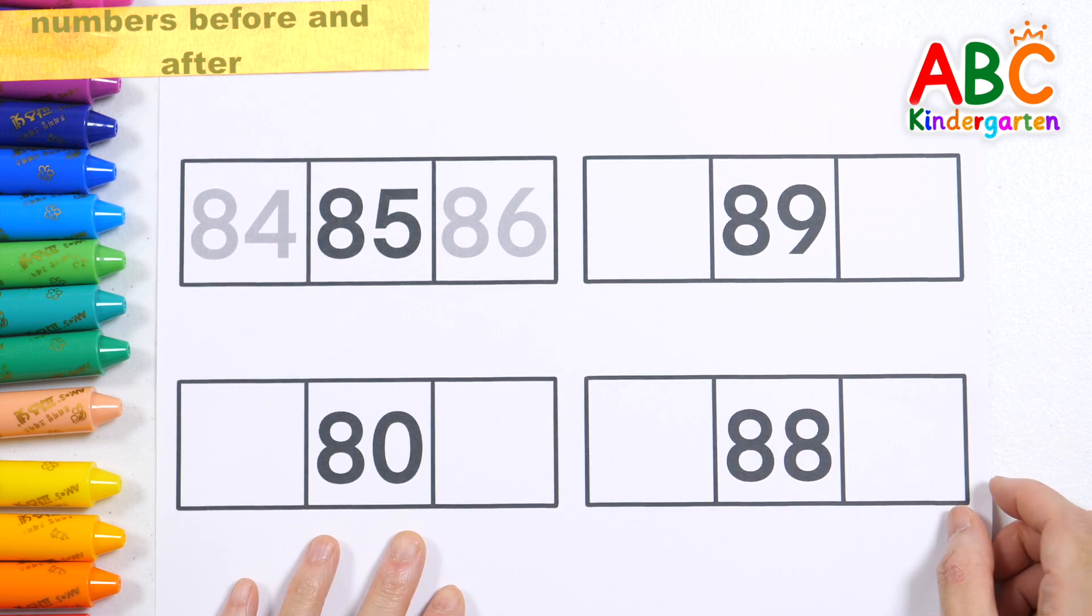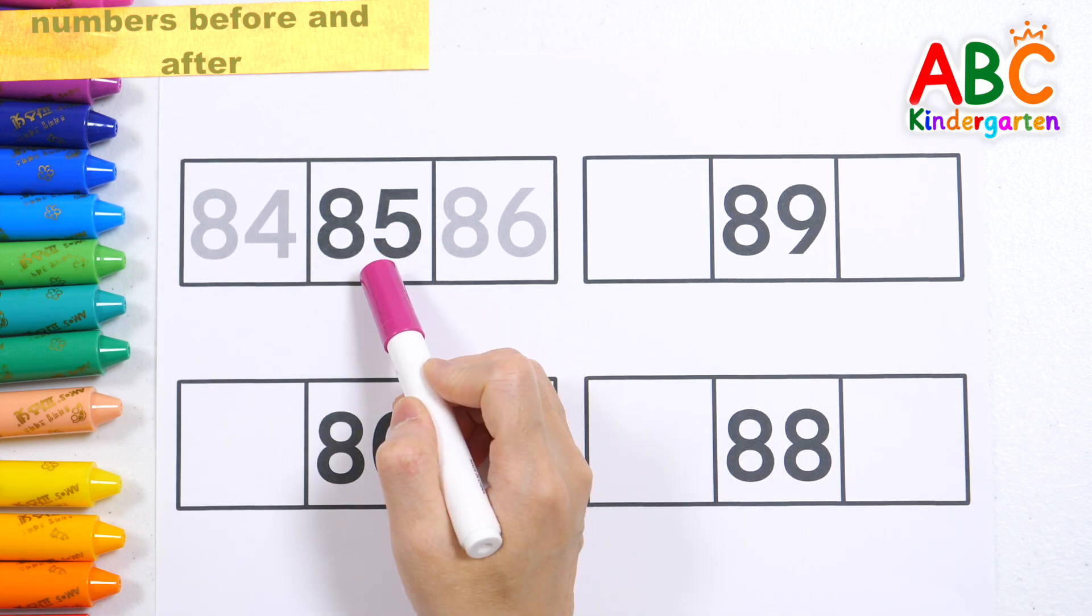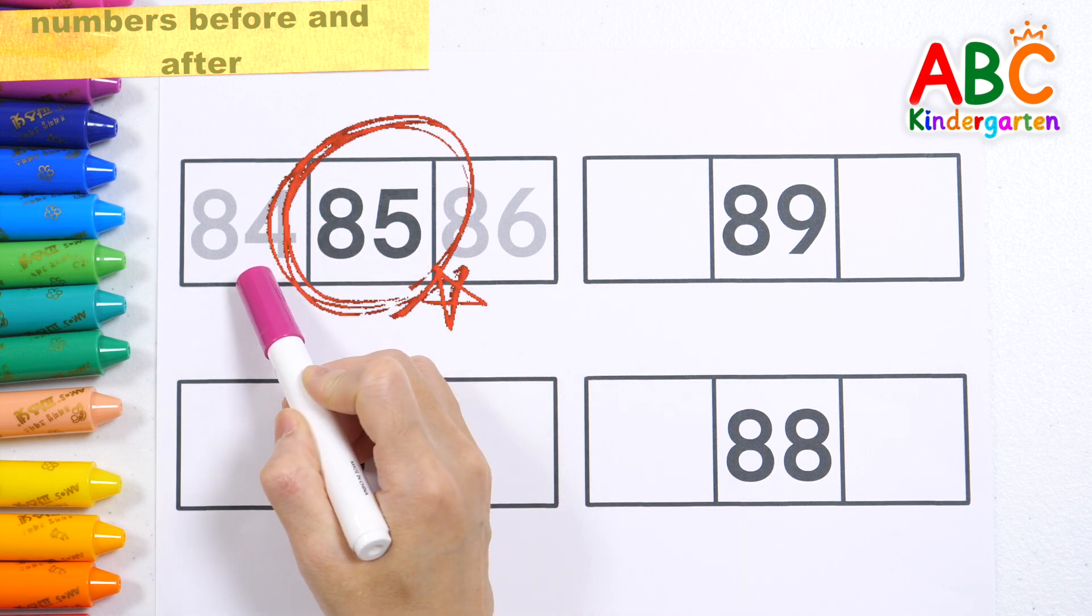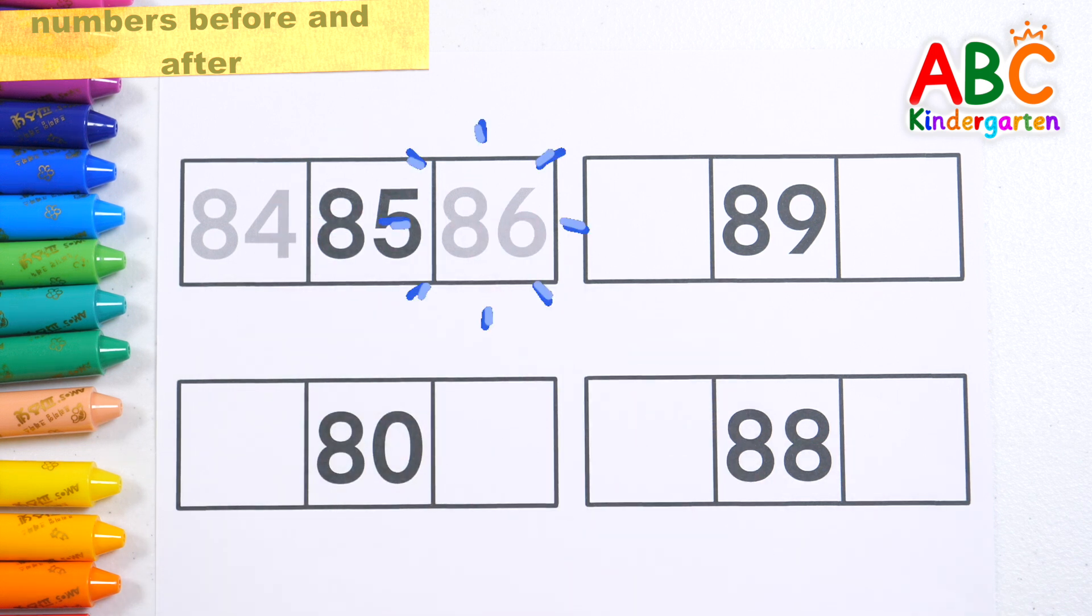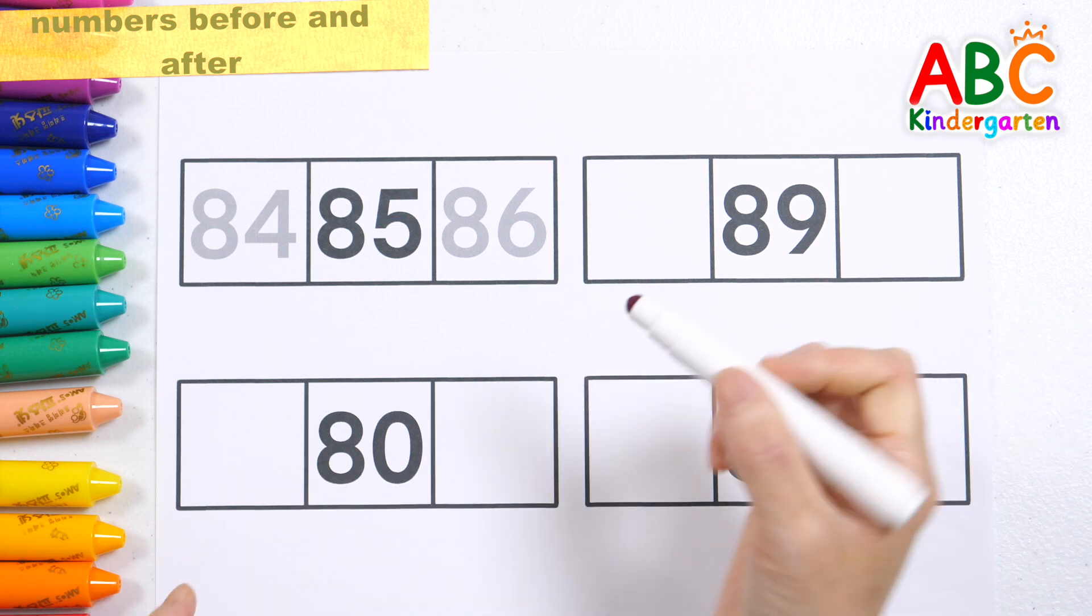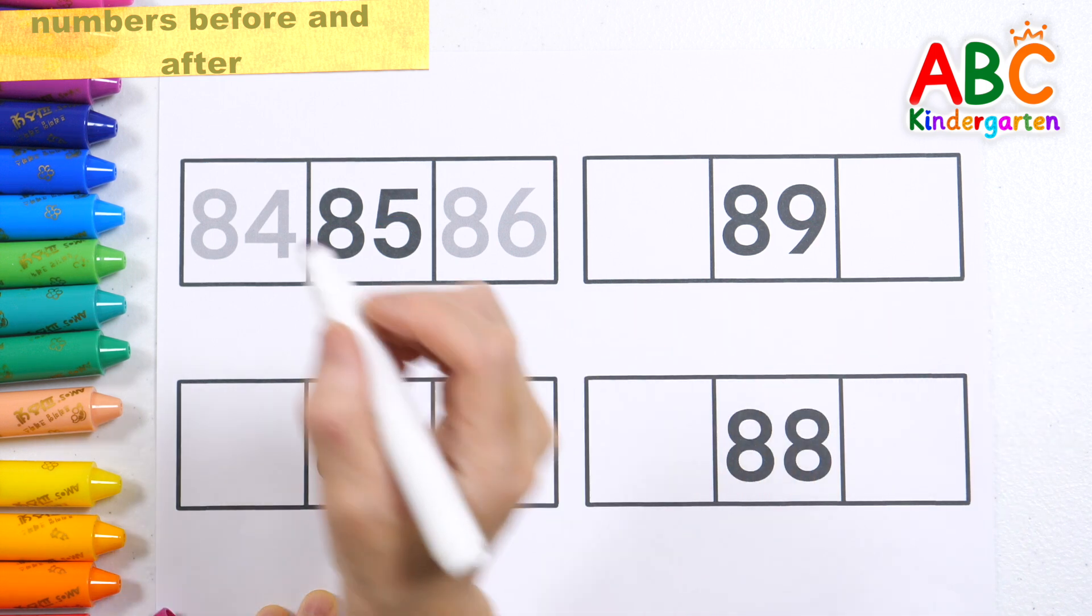Let's learn the numbers before and after. How? The number one less than eighty-five is eighty-four and the number one greater than eighty-five is eighty-six. Let's write down the numbers.